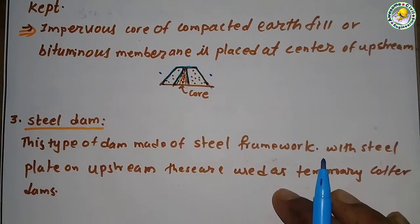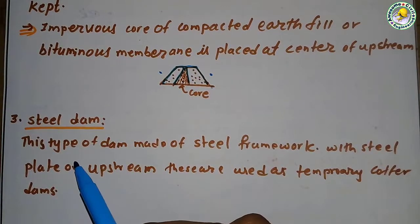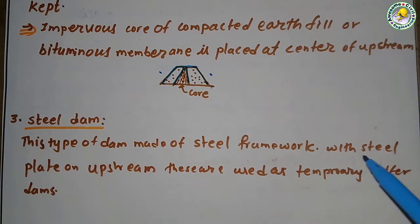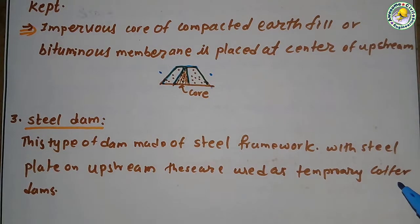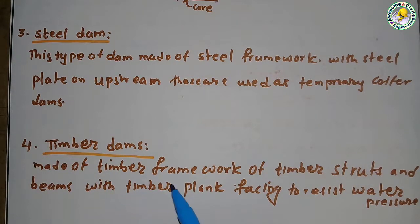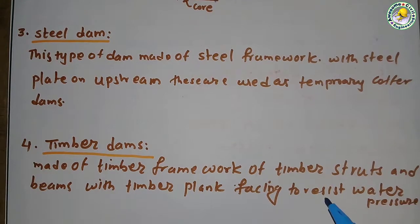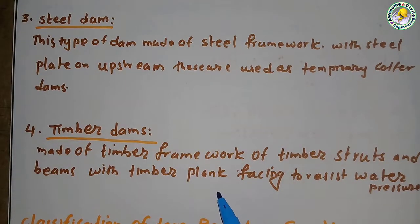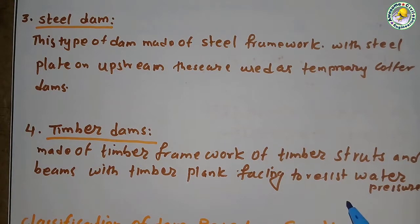A steel dam is made up of a steel framework with steel plates on the upstream face; these are used as temporary cofferdams. A timber dam is made up of a framework of timber struts and beams with timber plank facing on the upstream side to resist water pressure.